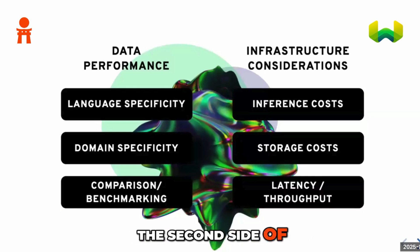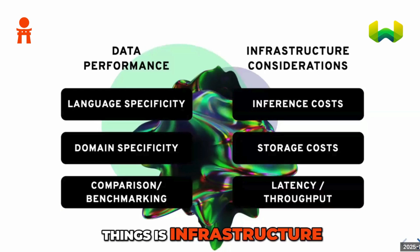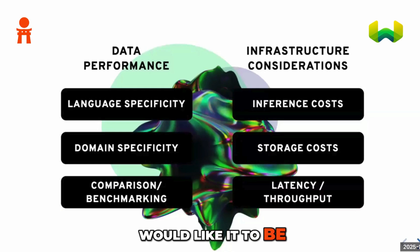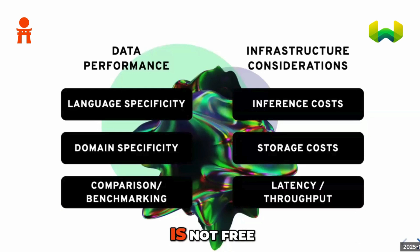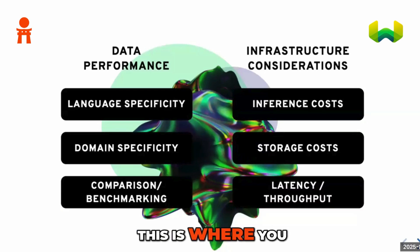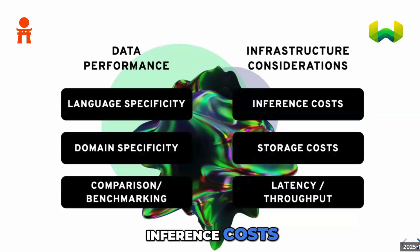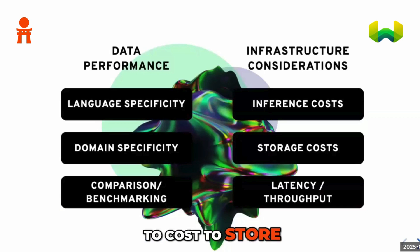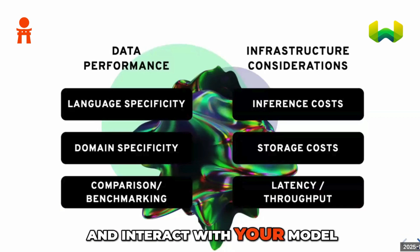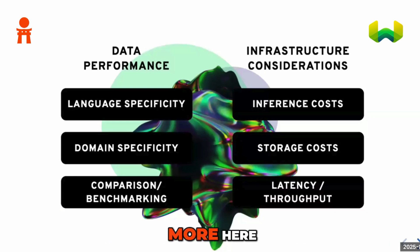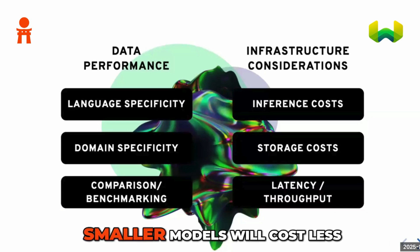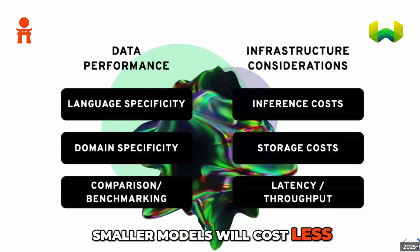The second side of things is infrastructure. As much as we would like it to be, building machine learning applications is not free. This is where you need to think about inference costs — what is it going to cost to store and interact with your model? Bigger models will cost more, smaller models will cost less.